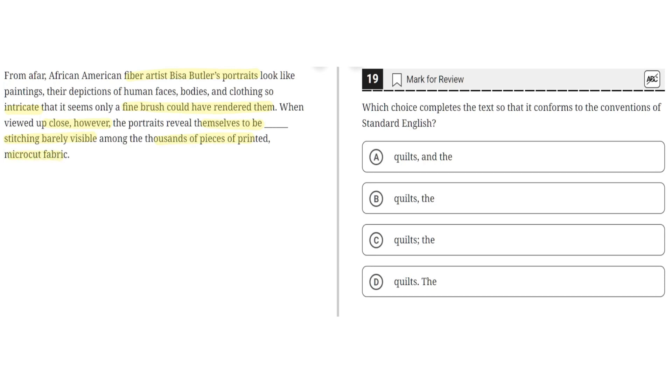So option A says, Quilt, comma, and, the. This is incorrect because this and would interrupt the flow of the passage, and the conjunction here is unnecessary. So A is incorrect.